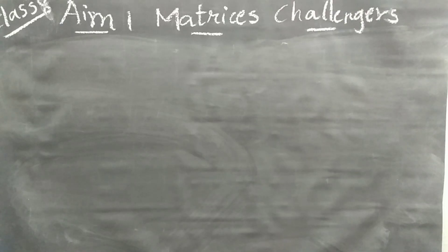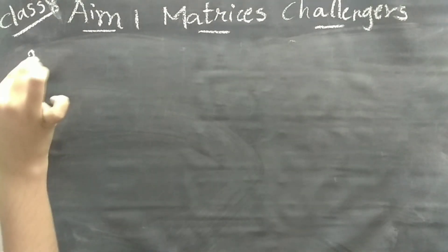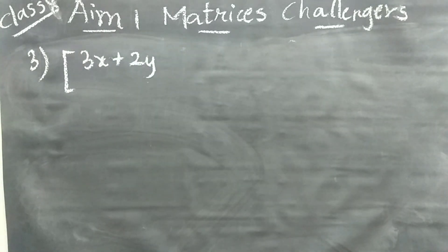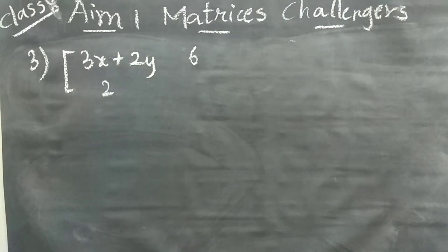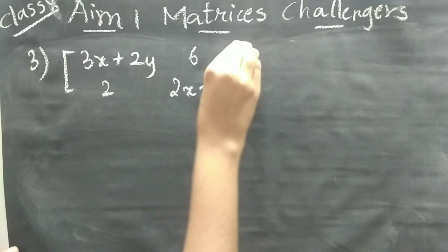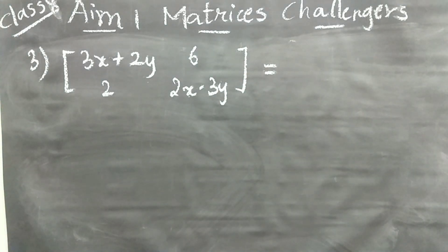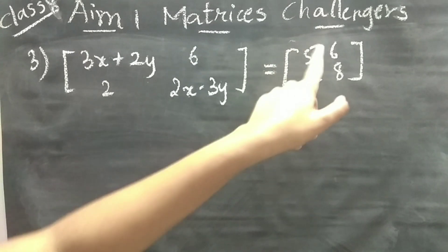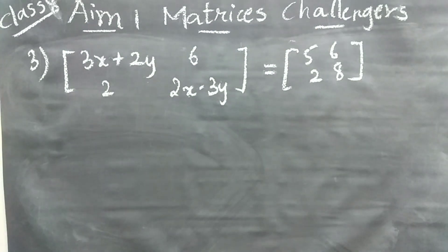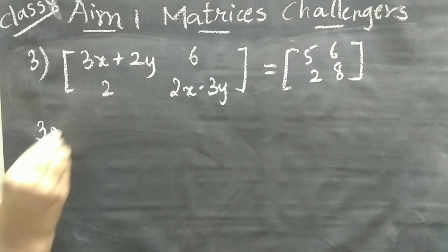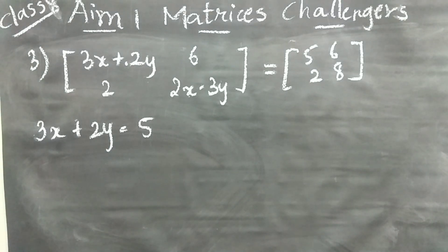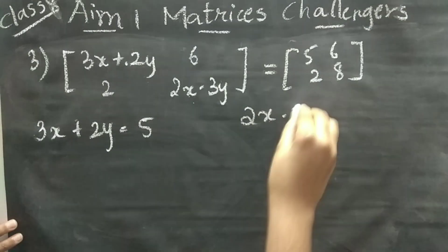Now the third question. Two equal matrices are given: [3x+2y, 6; 2, 2x-3y] = [5, 6; 2, 8]. Since they are equal matrices, corresponding elements are equal. So 6 equals 6 and 2 equals 2. We frame our equations: equation 1 is 3x + 2y = 5, and equation 2 is 2x - 3y = 8.